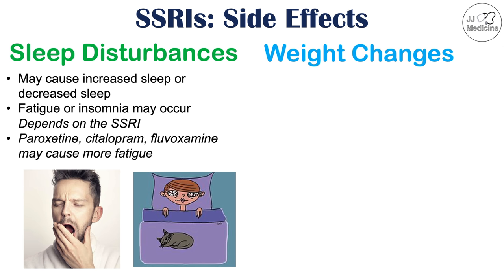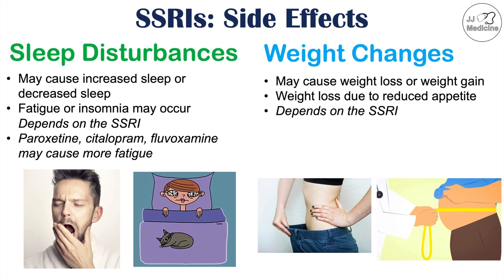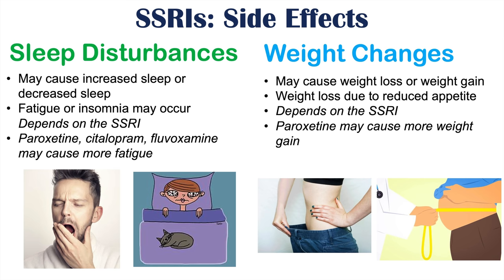Weight changes can also occur with SSRI use — SSRIs may cause weight loss or weight gain. Weight loss is due to reduced appetite, and this depends on the SSRI being used. For instance, paroxetine may cause more weight gain. As you can see, paroxetine has among some of the higher and more challenging side effects from SSRIs, causing a lot of side effects compared to some of the others.